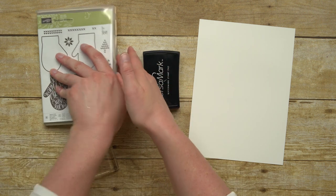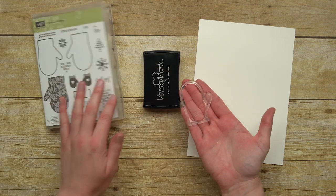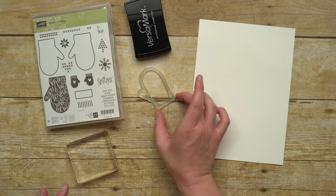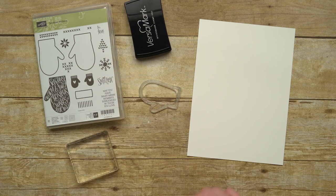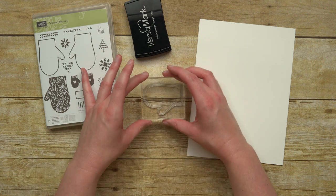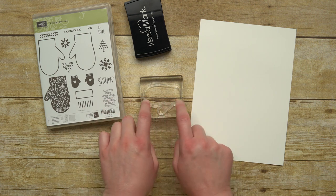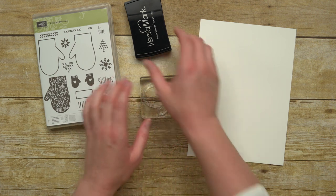This set also looks great heat embossed. So I'm going to show you how to do that really quick. Pick your mitten out, and because these are photopolymer, I like to set my stamp down on the tabletop and let it relax back into its normal shape, because they're pretty flexible, and then put my block on top of it. That way I can be sure that my mitten shape will match up with my Framelits.